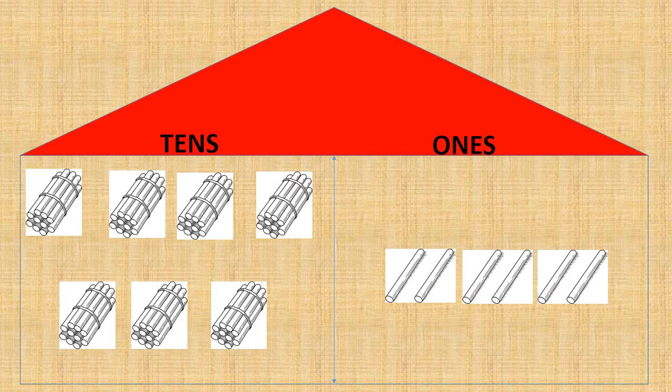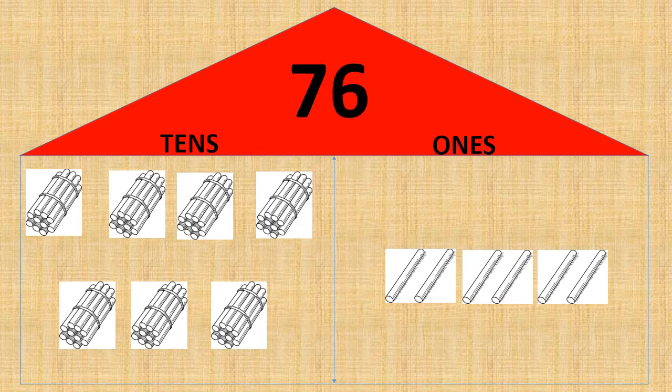Now let's again count the bundle of tens. One, two, three, four, five, six, seven. We have seven bundles of tens. That means we have seven tens. Now let's count the ones. One, two, three, four, five, six — we have six ones. Seven tens and six ones gives us the number seventy-six.